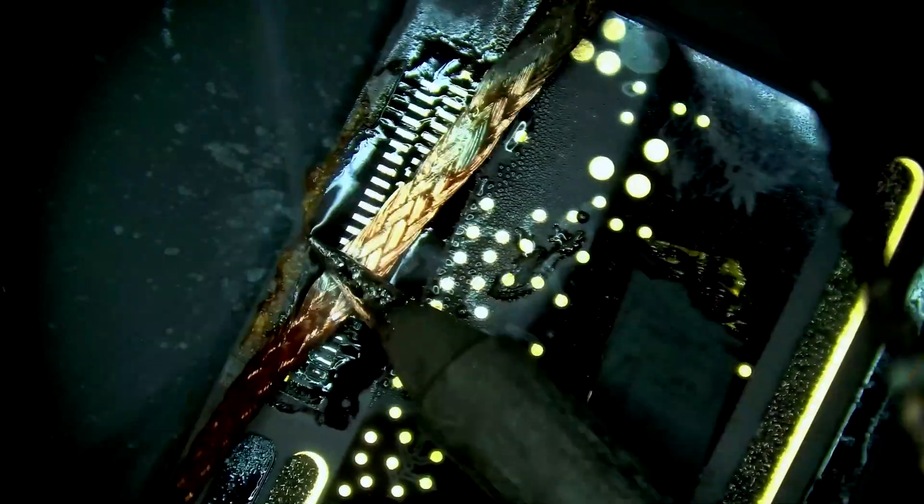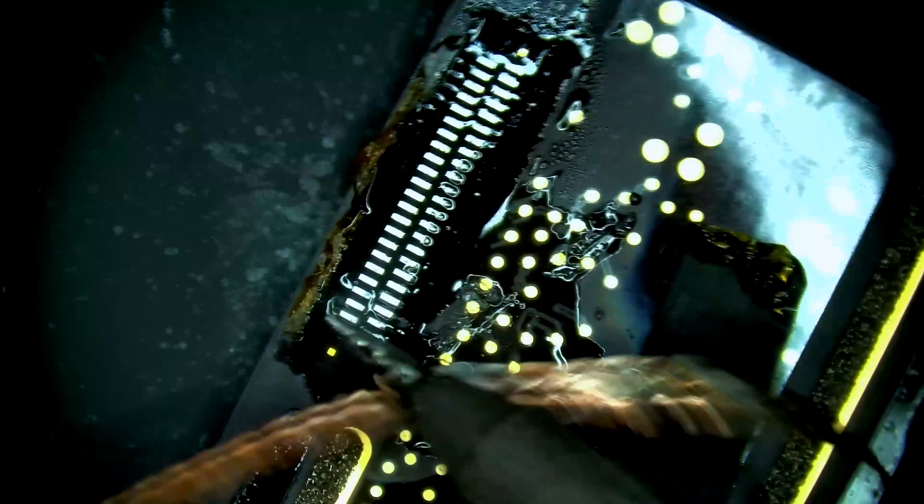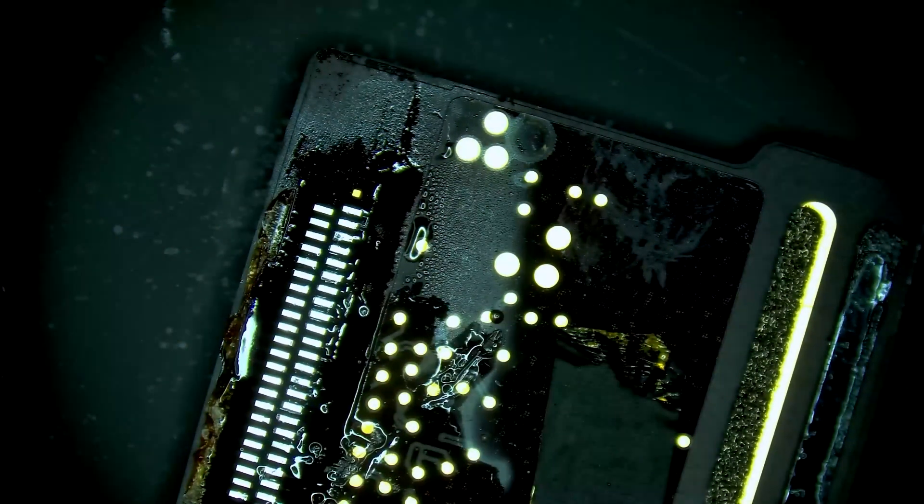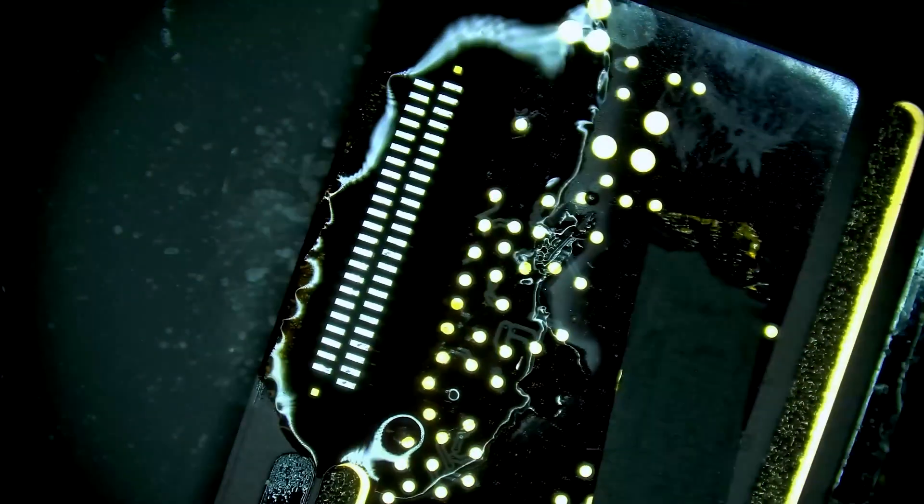Now we apply some more flux and use copper wick and we are going to flatten each of the pads. Once that's all done we're going to clean it up with some 99% isopropyl alcohol and some clean room wipes.